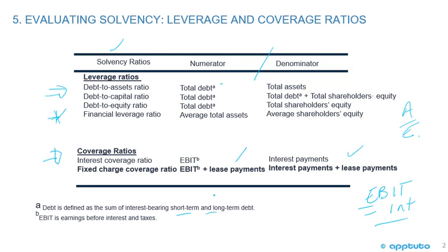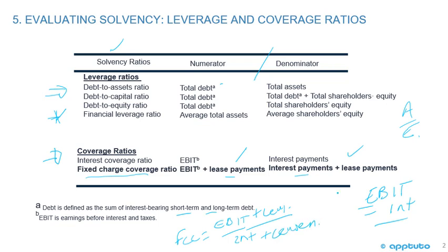The interest coverage ratio is always an easy one to remember. The one that sometimes isn't familiar to candidates is the fixed charge coverage ratio. All we're doing is adding the lease payments to the numerator of the interest coverage ratio and adding the lease payments to the denominator. So if you can remember EBIT divided by interest, it's easy to remember the fixed charge coverage ratio — just add the lease payments to both the numerator and denominator.